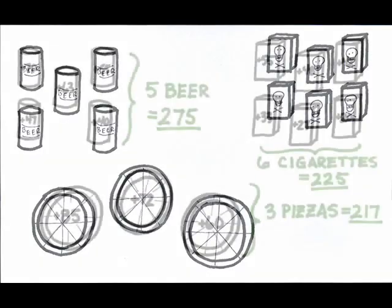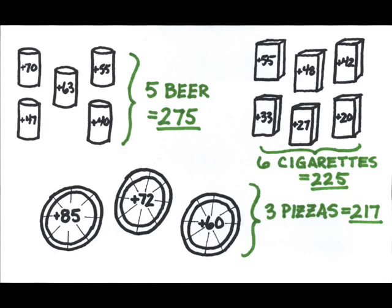I can tell this by adding up the marginal utilities from the units consumed. If you take a look at the pizza, the first gave 85, the second gave 72, the third gave 60, for a total of 217 units of satisfaction from those three pizzas. You could calculate for the cigarettes and the beer as well. Overall total, 717 units.